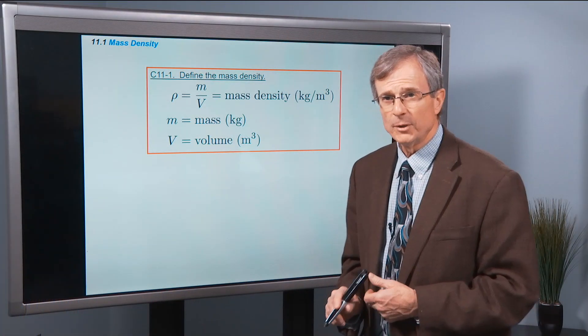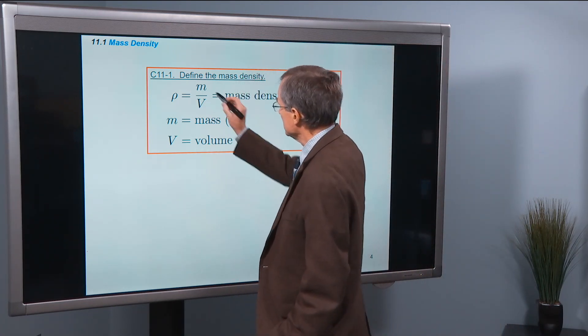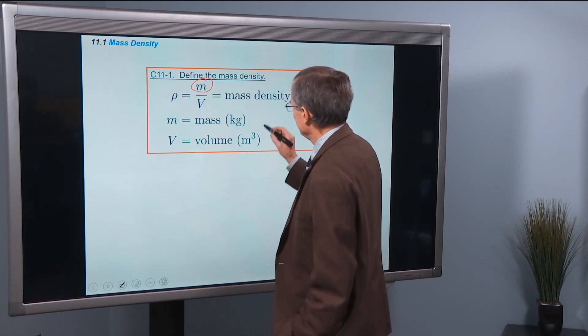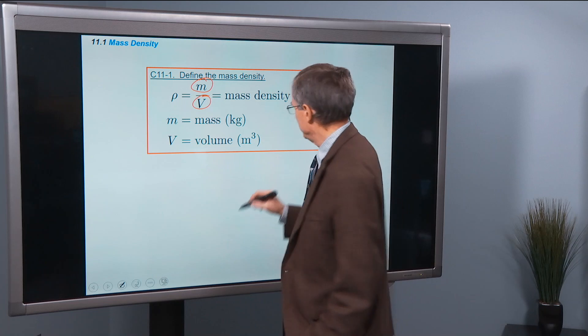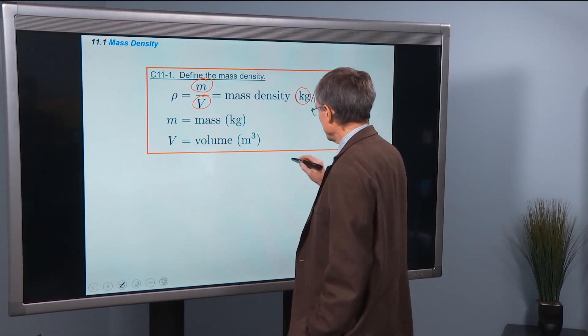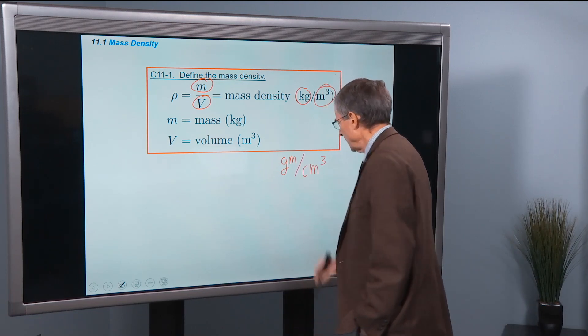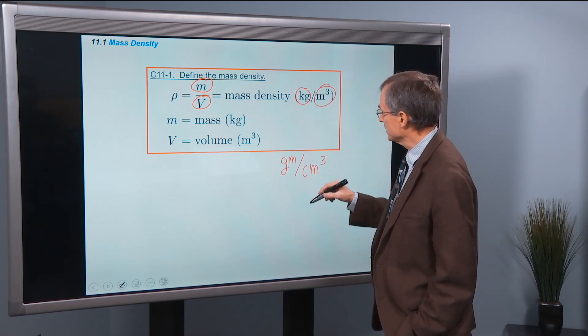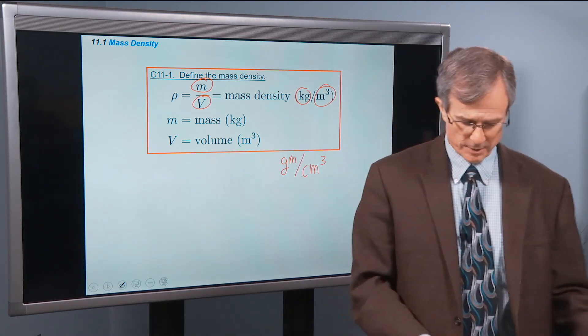In some of your classes you might have seen this definition before. Mass density, it's a mass measured in kilograms per unit volume measured in cubic meters. Sometimes measured in grams per cubic centimeter. But you could easily convert kilograms to grams, meters to centimeters, to get the difference.